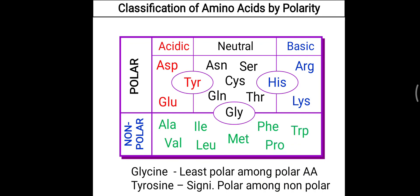To summarize the non-polar group: alanine is a simple amino acid; valine, leucine, and isoleucine are branched chain amino acids. Remember the mnemonic Allavaline PPT — alanine, valine, leucine, isoleucine, methionine, then PPT means phenylalanine, proline, and tryptophan. That completes the classification based on polarity of the side chain.